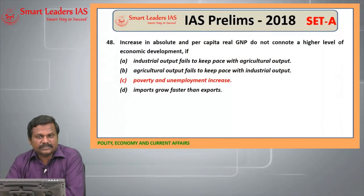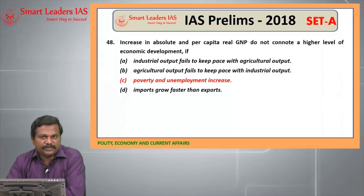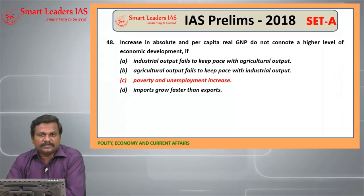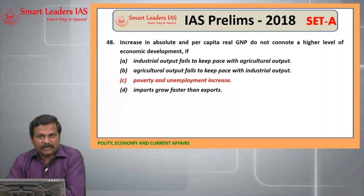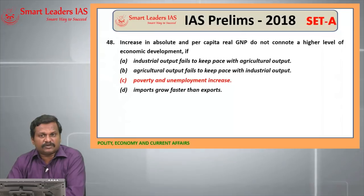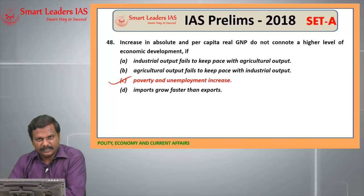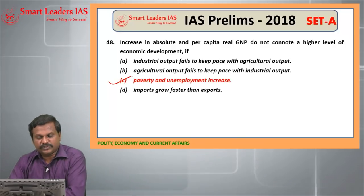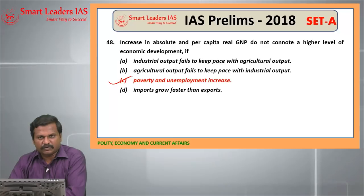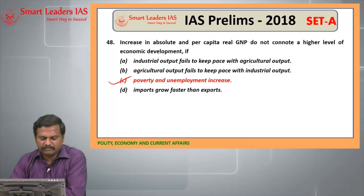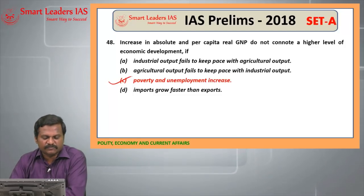48th question is a simple question asking the basic distinction between growth and development. Growth means prosperity, but development is the equitable distribution of growth. There may be growth but unequal distribution of wealth, which may result in poverty and unemployment increasing. So even though GNP may increase, it is not going to lead to economic development because there may be unequal distribution of income from growth. Without distribution of income, it leads to only poverty and unemployment. So the answer for the 48th question is C.